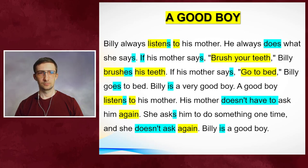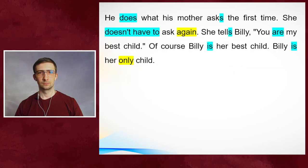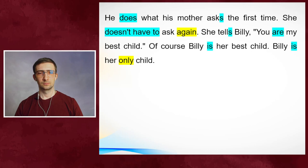A good boy listens to his mother. His mother doesn't have to ask him again. She asks him to do something one time, and she doesn't ask again. Billy is a good boy. He does what his mother asks the first time. She doesn't have to ask again. She tells Billy, 'You are my best child.' Of course, Billy is her best child. Billy is her only child.